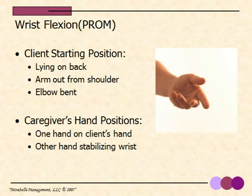The next stretch is wrist flexion. Once again, the client is lying on their back, their arm is out from the shoulder, and their elbow is bent. Caregivers, one hand should be in the client's hand and the other hand should be stabilizing their wrist. This passive range of motion stretch can help with feeding and can also help reduce pain in the wrist joints.